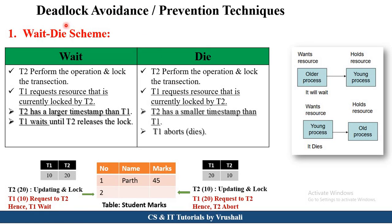Now let's understand different deadlock avoidance techniques in a database. There are two techniques: the wait-die scheme and the wound-wait scheme. First, let's understand the wait-die scheme. To understand this concept, you must know about log-based and timestamp ordering protocols — I have attached a link to that video in the description box below. Let's take an example. There are two transactions, T1 and T2. The timestamp of T1 is 10 and the timestamp of T2 is 20. T1 (timestamp 10) is the older transaction and T2 (timestamp 20) is the younger or newer transaction.